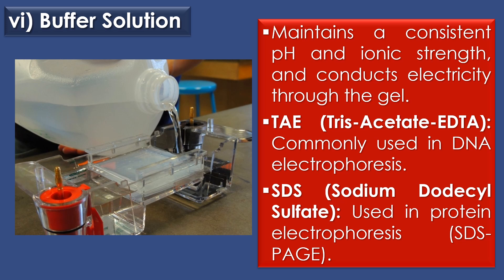The sixth component is buffer solution. The buffer maintains a consistent pH and ionic strength and conducts electricity through the gel. Two common buffers are used: the first is TAE, which stands for Tris-Acetate-EDTA, commonly used in DNA electrophoresis; and the second is SDS, sodium dodecyl sulfate, used in protein electrophoresis and widely used in the SDS-PAGE technique.